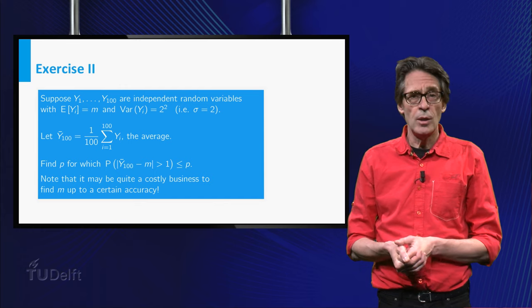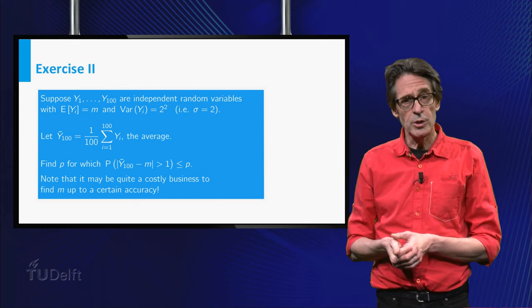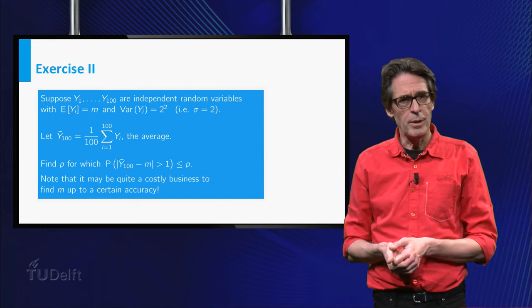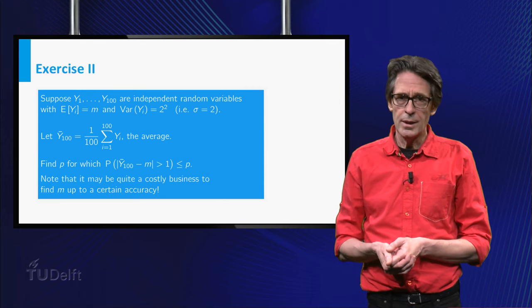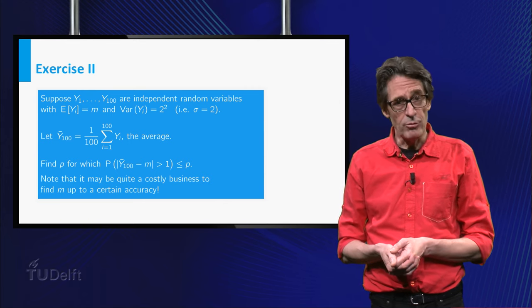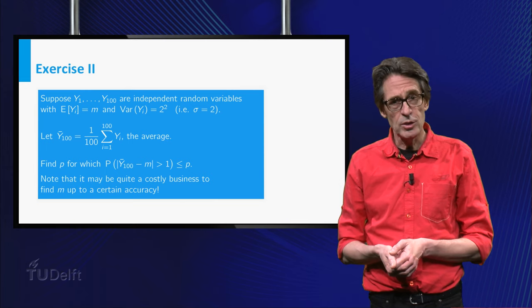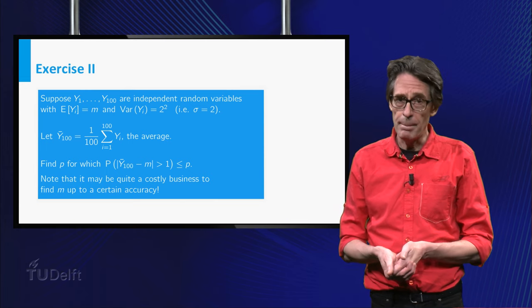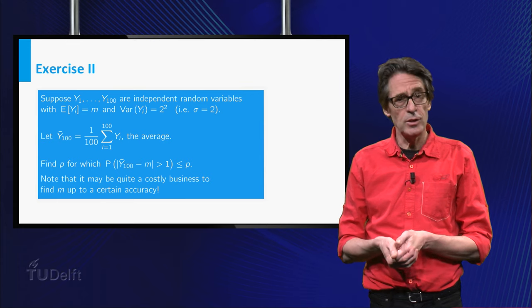Second, once again return to the example we started with. Suppose the measurements of the melting point can be considered indeed as independent random variables of which the expectations are equal to the true melting point m, and the standard deviation is 2 degrees.